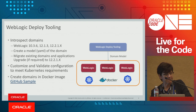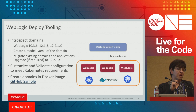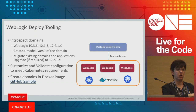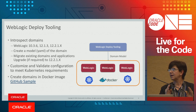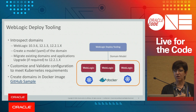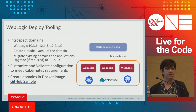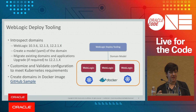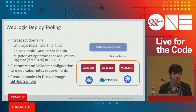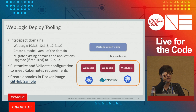The WebLogic Deploy Tooling introspects a WebLogic domain configuration, supporting versions from 10.3.6 all the way to 12.2.1.3. It creates a YAML model of the domain, which you can then modify — for example, removing a data source or adding a JMS queue. You can then migrate that configuration into a persistent volume or inside a Docker image, making it simple to move on-premise configurations to this environment.